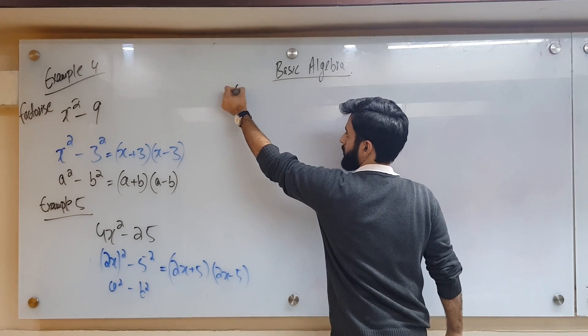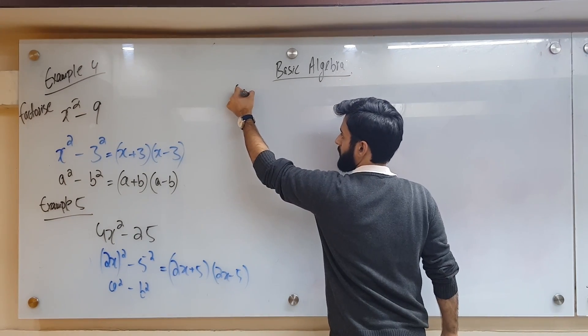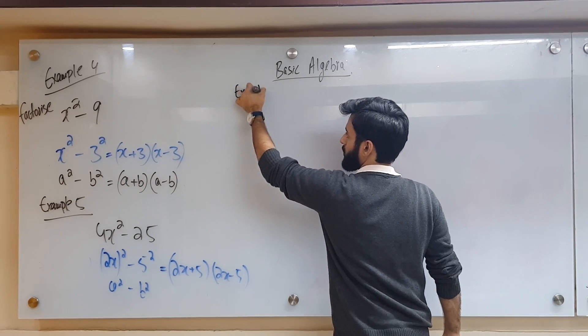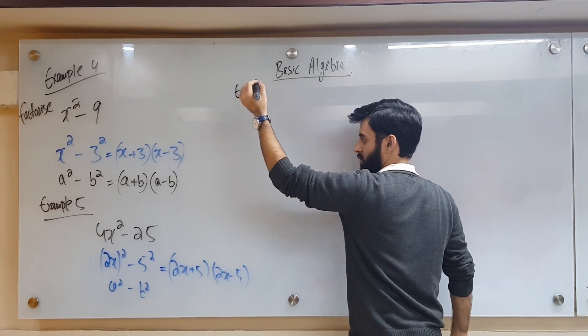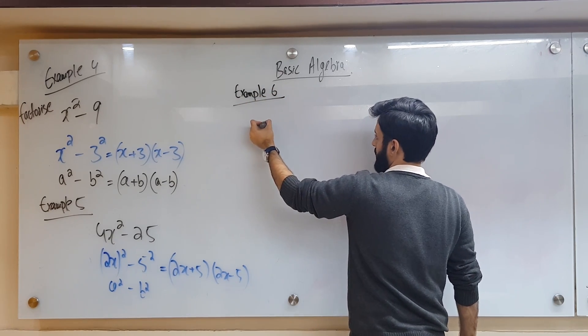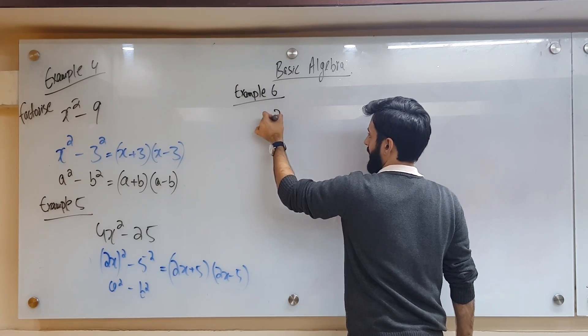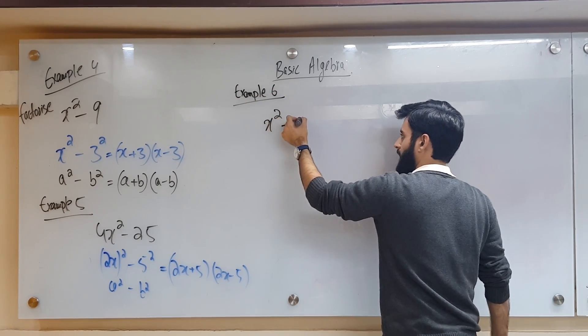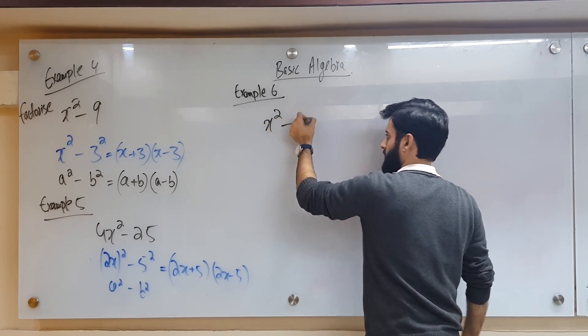So 4x squared minus 25 turns into 2x plus 5 times 2x minus 5. What about the next one?